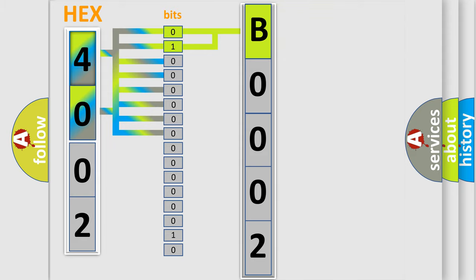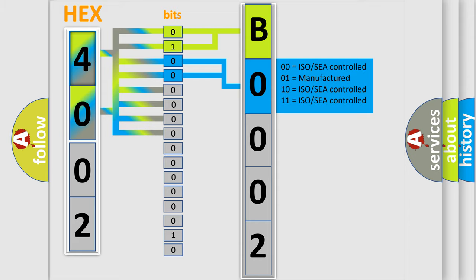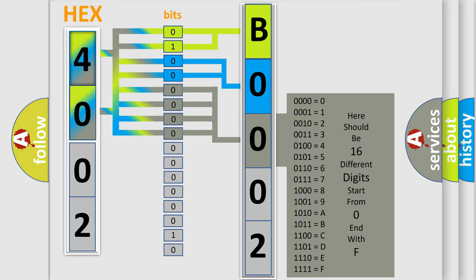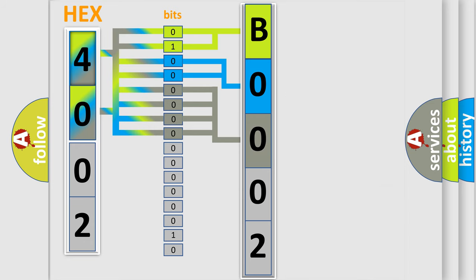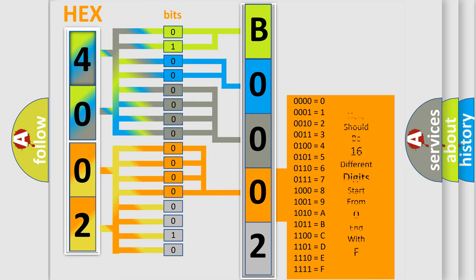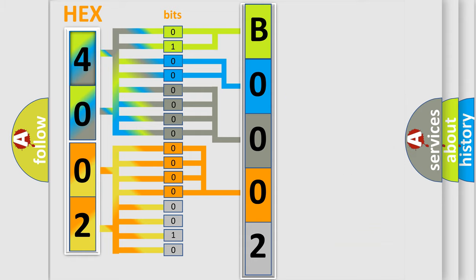The next two bits determine the second character. The last bits of the first byte define the third character of the code. The second byte is composed of a combination of eight bits. The first four bits determine the fourth character of the code, and the combination of the last four bits defines the fifth character. A single byte conceals 256 possible combinations.